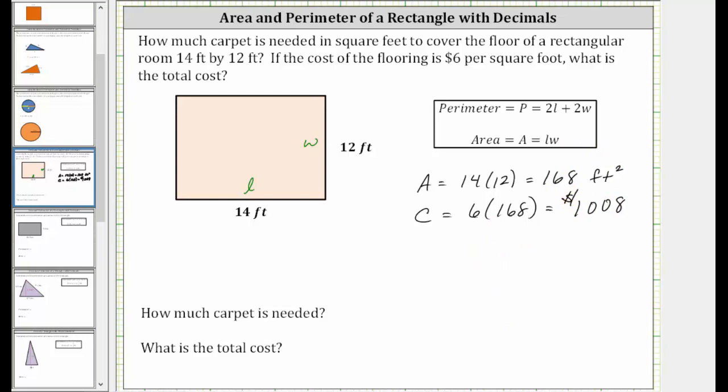So now to answer the questions: How much carpet is needed? 168 square feet of carpet is needed. And the total cost is $1,008.